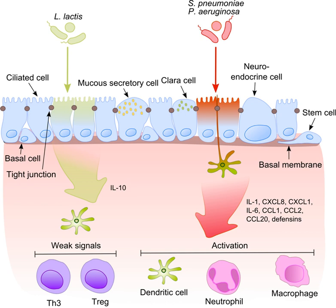Changes in microbial community composition seem to play a role in the progression of such pulmonary disorders as chronic obstructive pulmonary disease (COPD), asthma, and cystic fibrosis. In humans, S. aureus is part of the normal microbiota present in the upper respiratory tract, and on skin and in the gut mucosa.